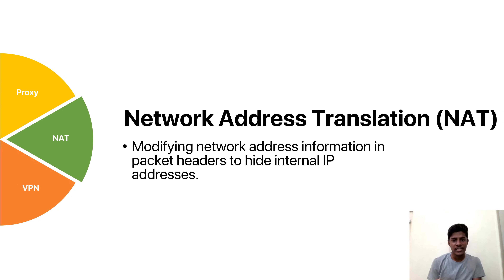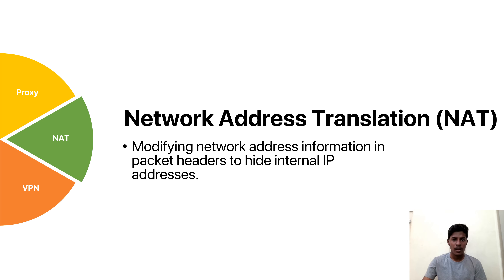Next is network address translation, or NAT. It's like a magician's trick for your network. Imagine your internal devices having private addresses like hidden identities, and NAT is the magician's cloak that transforms these addresses into a single public address when communicating with the outside world. It helps maintain the privacy and security of your internal network by allowing multiple devices to share a common public IP address. NAT plays a key role in managing the limited pool of public IP addresses available and adds an extra layer of security for your devices.